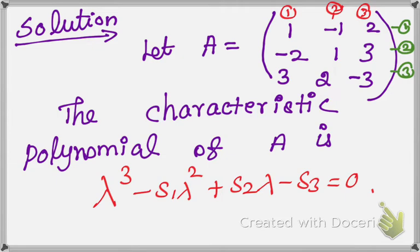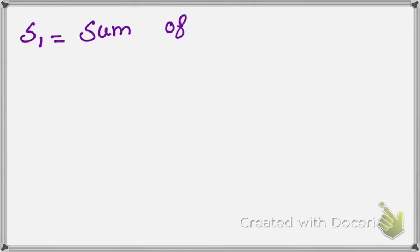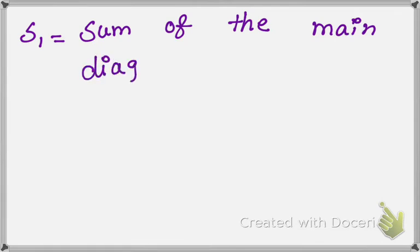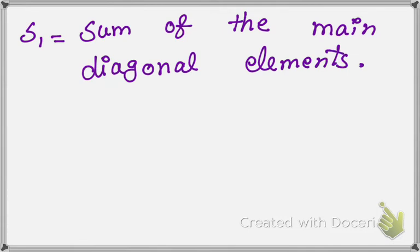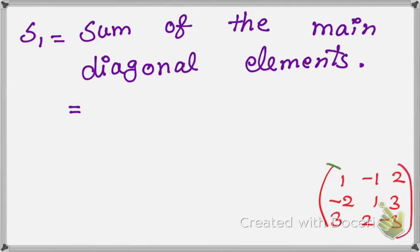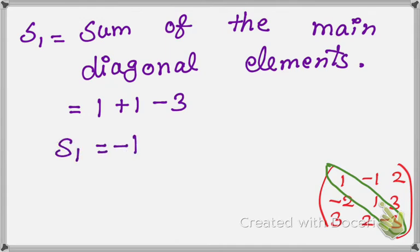If it is a 2 cross 2 matrix, we use another formula. First, we are going to find the S1 value. S1 equals the sum of the main diagonal elements. The main diagonal elements of the matrix are 1, 1, and minus 3. So S1 equal to 1 plus 1 plus minus 3, you get minus 1. This is the S1 value.